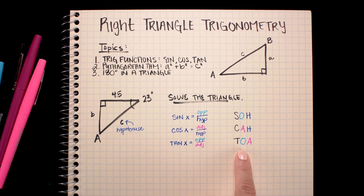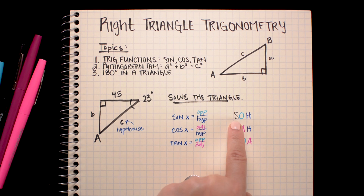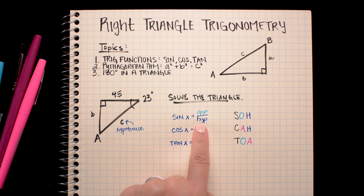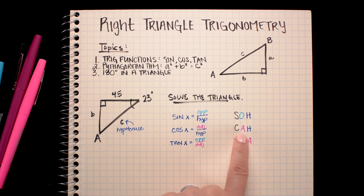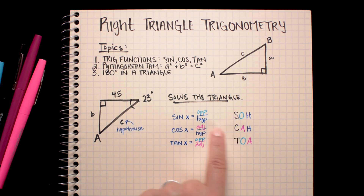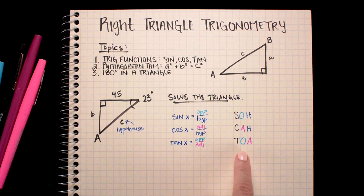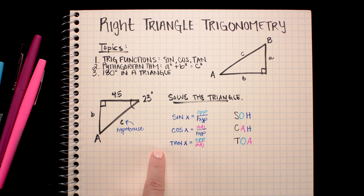The handy way to remember these relationships is the mnemonic device SOHCAHTOA. SOH stands for sine: S for sine, O for opposite, H for hypotenuse. CAH stands for cosine: C for cosine, A for adjacent, H for hypotenuse. And TOA stands for tangent: T for tangent, O for opposite, A for adjacent. SOHCAHTOA is the easiest way to remember these trig relationships.